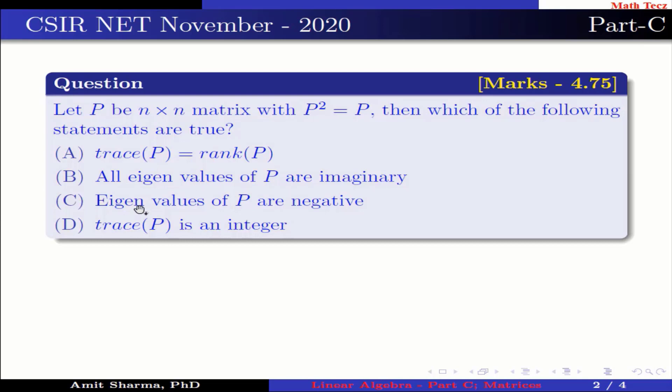Option C: eigenvalues of P are negative. Option D: trace of P is an integer.